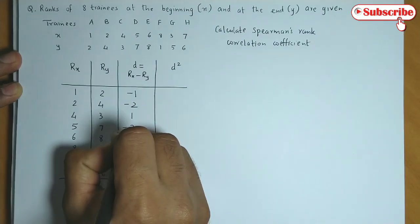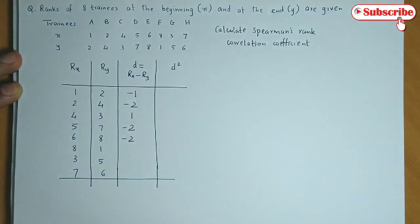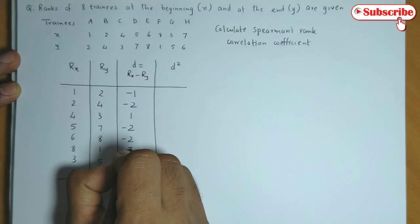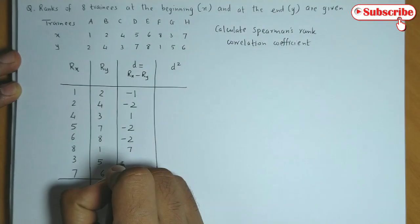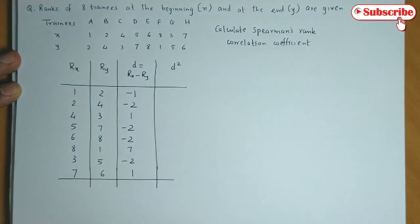6 minus 8, minus 2. 8 minus 1, 7. 3 minus 5 is minus 2. 7 minus 6 is 1.